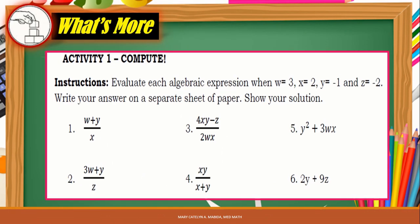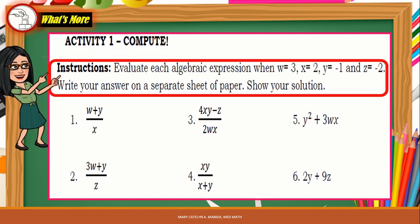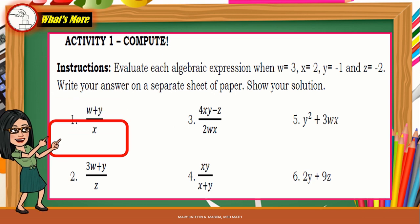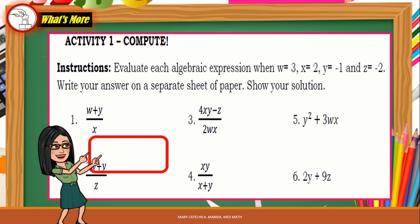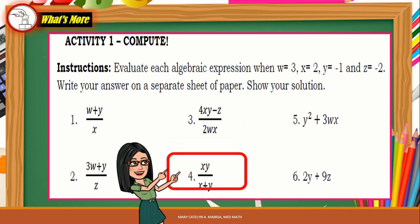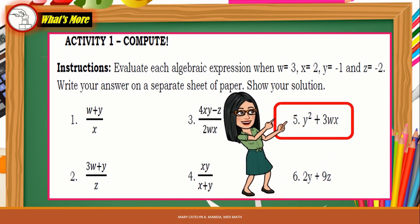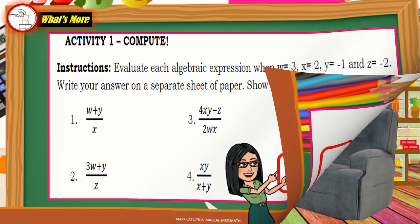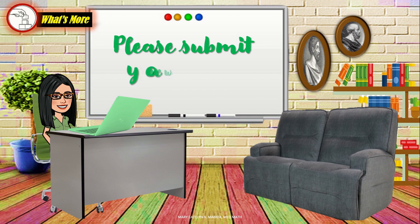It's time for you to compute. Evaluate each algebraic expression when M equals 3, X equals 2, Y equals negative 1, and Z equals negative 2. Write your answer on a separate sheet of paper and show your solution. Number 1: W plus Y over X. Number 2: 3W plus Y over Z. Number 3: 4XY minus Z over 2WX. Number 4: XY over X plus Y. Number 5: Y squared plus 3WX. Number 6: 2Y plus 9Z. Please submit your work on time.